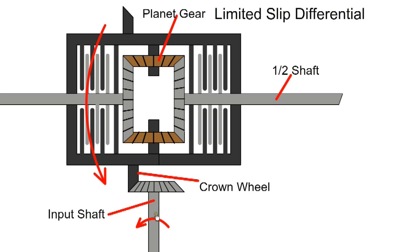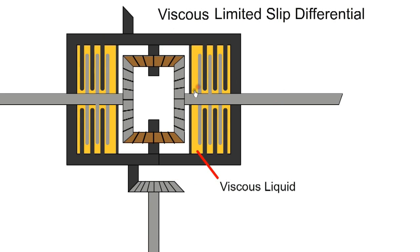With a viscous type LSD, the input pinion drives the crown gear and cage. The cage rotates and drives the sun gears with the planet gears. The cage has a set of plates fixed to it, and the half shaft has another set of plates. The sealed chamber around the plates is filled with a thick viscous liquid.